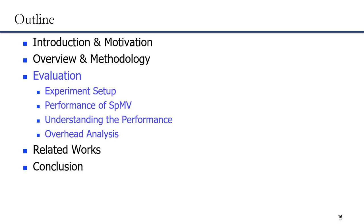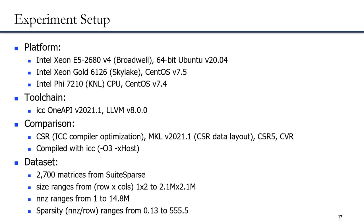Next, I demonstrate our evaluation results. We evaluate DEMV with SPMV on platforms as shown in the slide. We compare DEMV with SPMV implementations from Intel MKL, CSR5, and CVR. MKL uses the CSR data layout and the parameters of CSR5 and CVR remain as default. For each run, we execute the SPMV 1,000 times and measure the average execution time. To evaluate the SPMV, we select 2,700 matrices from the SuiteSparse matrix dataset, including both regular and irregular matrices with characteristics as shown in the slide.